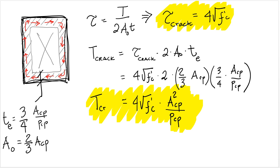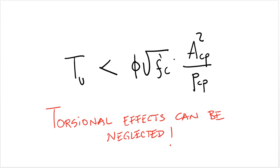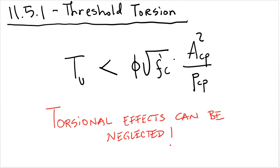What ACI does is it says if your torsional moment is less than a quarter of the cracking moment, torsional effects can be neglected. So this can be found in section 11.5.1 of ACI, and this is what ACI calls threshold torsion. So it's basically the threshold for which you can neglect torsional effects on your member, because the shear stresses are expected to be so low that the member can resist distortion without the need for any additional reinforcement.